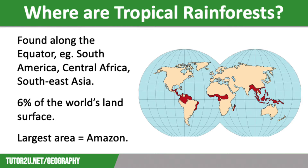We're going to start off by thinking about where this tropical rainforest biome is located. Tropical rainforests lie along the equator in South America, Central Africa, Southeast Asia and Northeast Australia. They cover approximately 6% of the world's land surface.